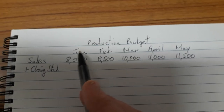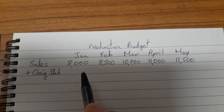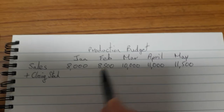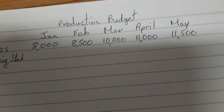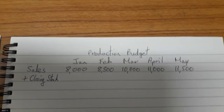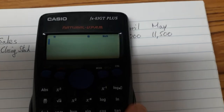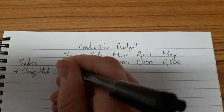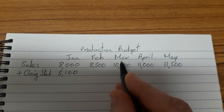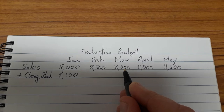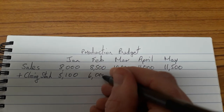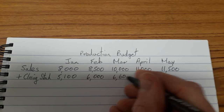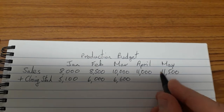It says stocks of finished goods are maintained at 60% of the following month's sales requirement. So at the end of January we want to have 60% of the units we're going to sell in February ready to go. We get 60% of 8,500 — on the calculator, 8,500 multiplied by 0.6 gives 5,100. That's our closing stock for January. For February, we get March's sales multiplied by 0.6, which gives 6,000.